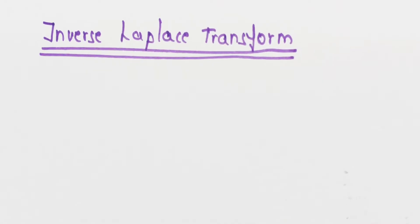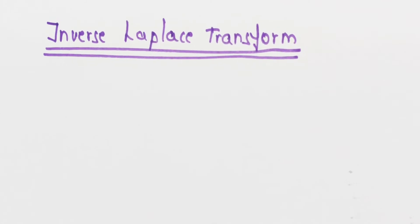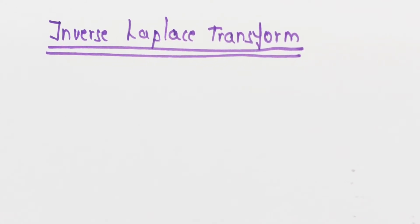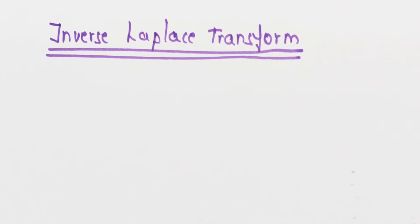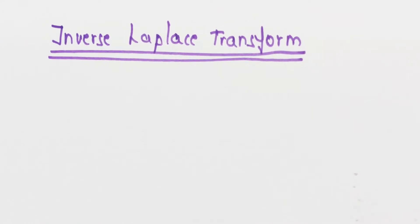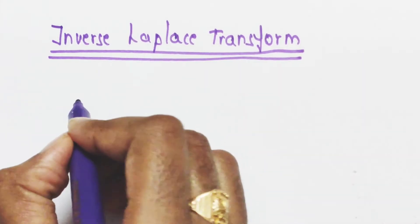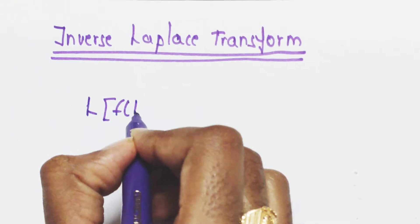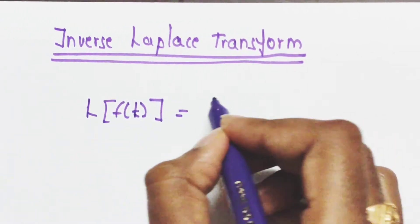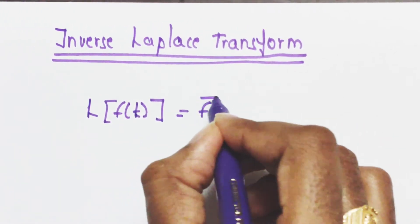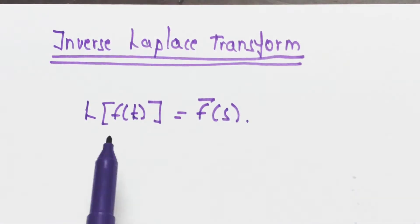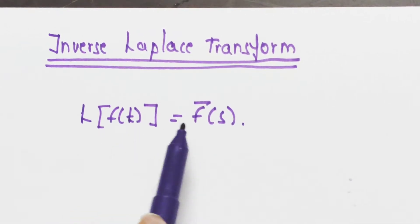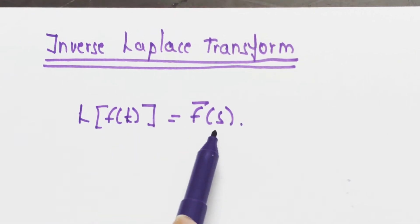Coming to the inverse Laplace transform — to understand it, we first need to understand the Laplace transform. The formula of Laplace transform is: Laplace of f(t) is equal to F-bar of s. So the Laplace transform of f(t) gives us F-bar of s.